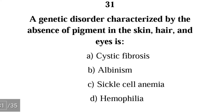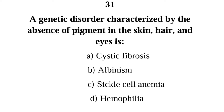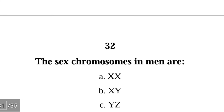Number thirty-one: a genetic disorder characterized by the absence of pigment in the skin, hair, and eyes is — cystic fibrosis or albinism? The correct answer is B, albinism. In albinism, the individual lacks melanin pigments in the skin, hair, and eyes.